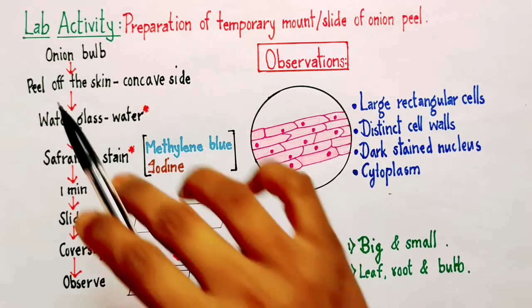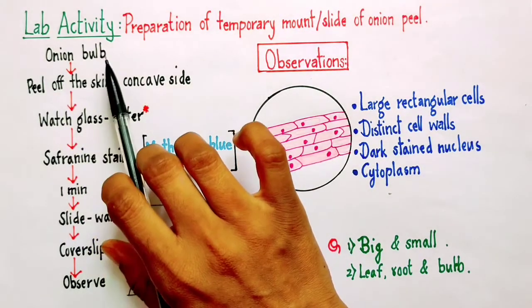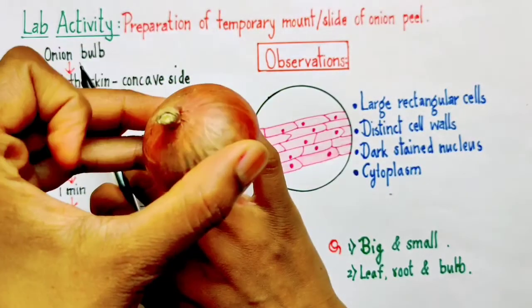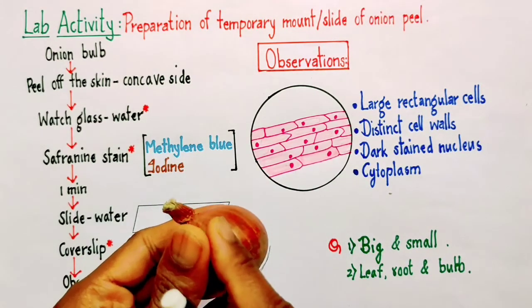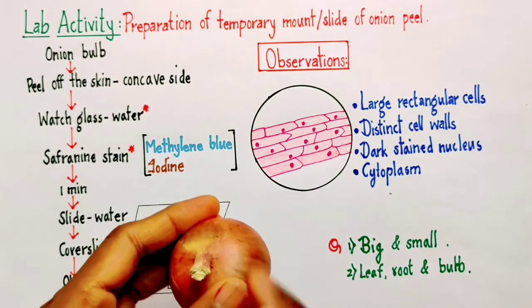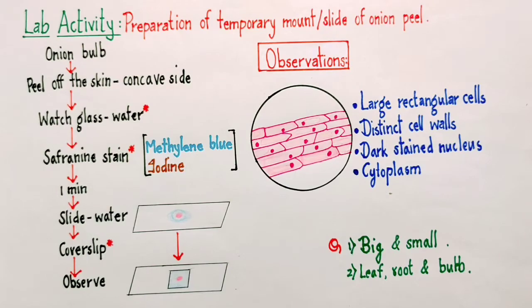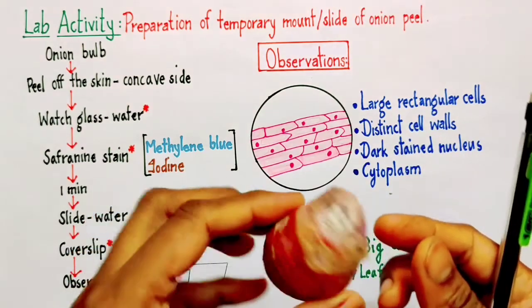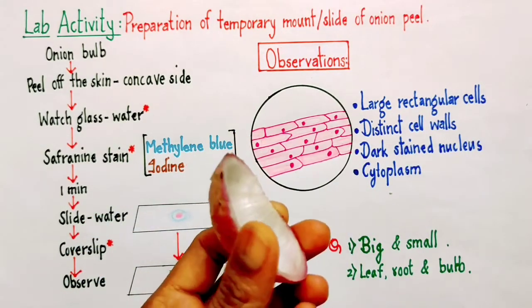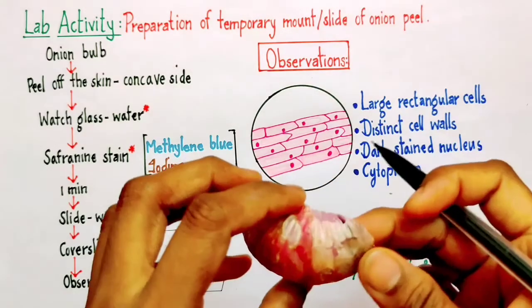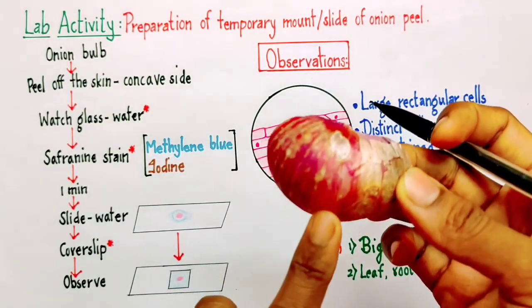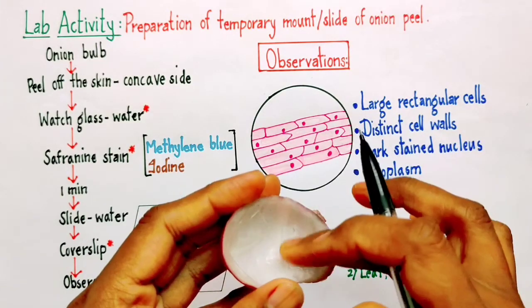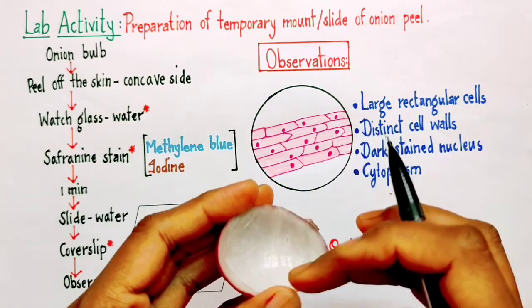The first step is we need an onion bulb. We have to cut the onion and once we cut this onion, we are going to get many pieces. Here I have one piece with me. You can see this is the convex side of the onion and this is the concave side of the onion.